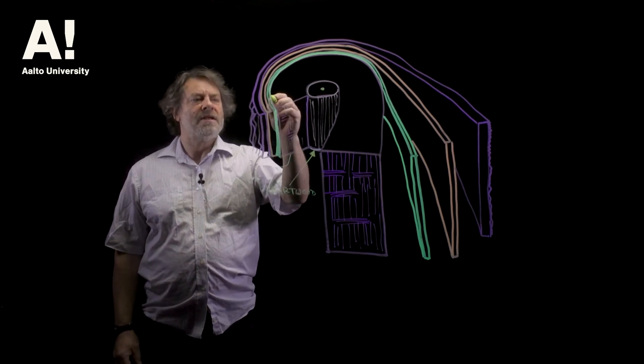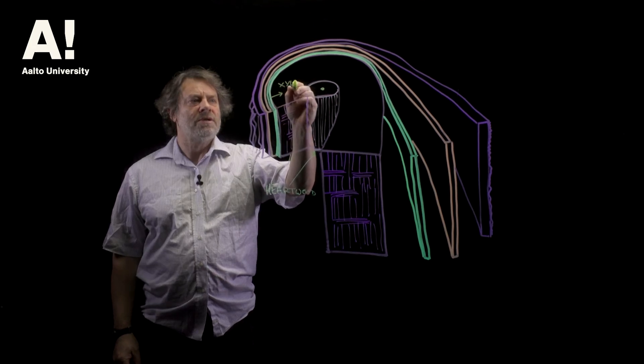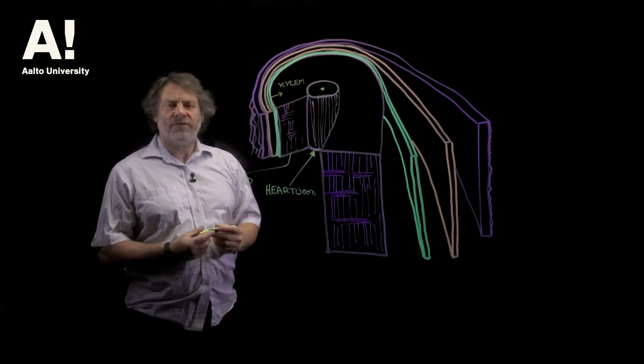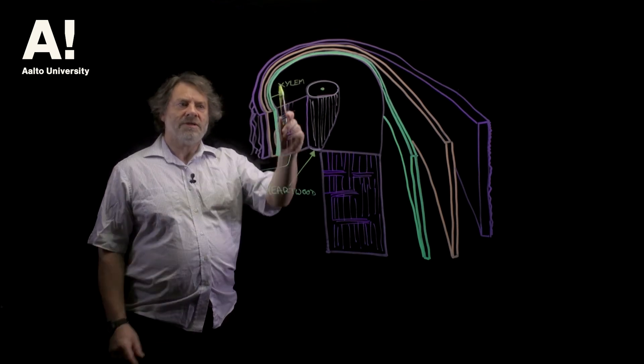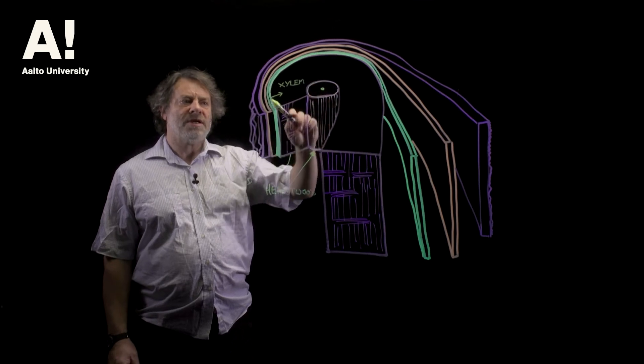And then cells either go inwards to form what's called xylem tissue, which is the wood that we're familiar with. So the xylem tissue is not alive. The cambium is alive.